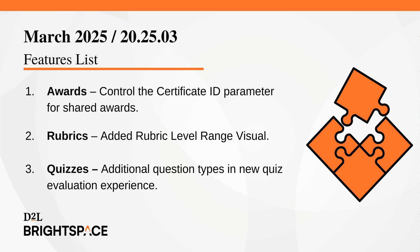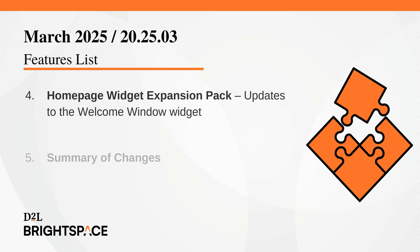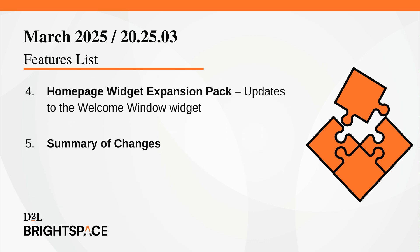In Awards, control the Certificate ID parameter for shared awards. Now in Rubrics, add rubric level ranges for improved visual clarity. The new Quiz Evaluation experience supports additional question types. The Homepage Widget Expansion Pack introduces updates to the Welcome Window widget. And finally, a summary of changes made for all the other features.